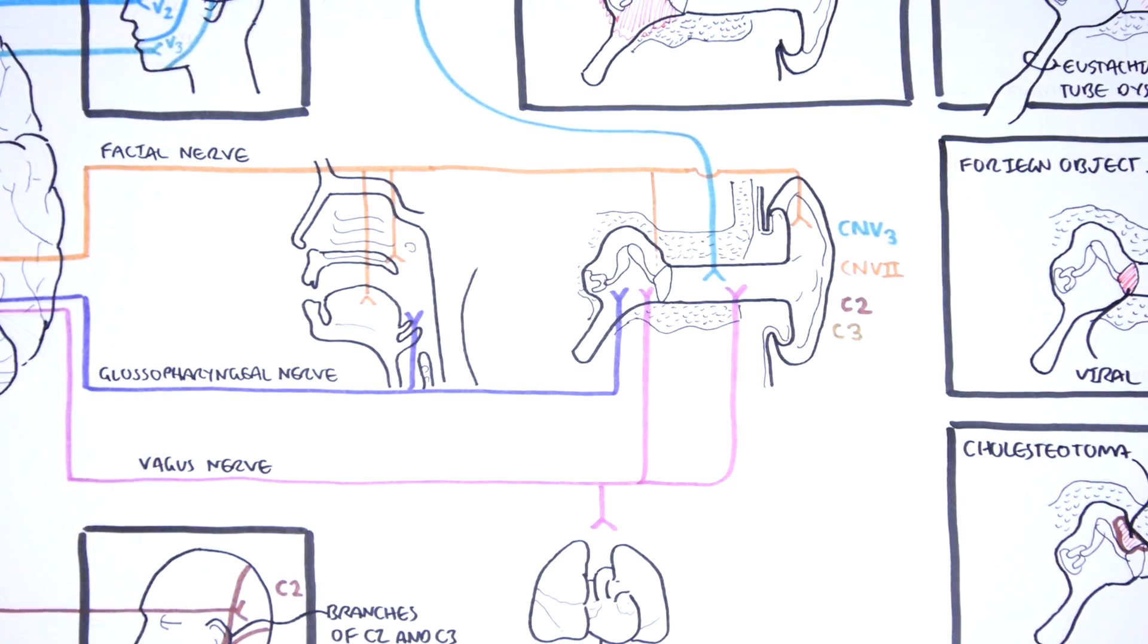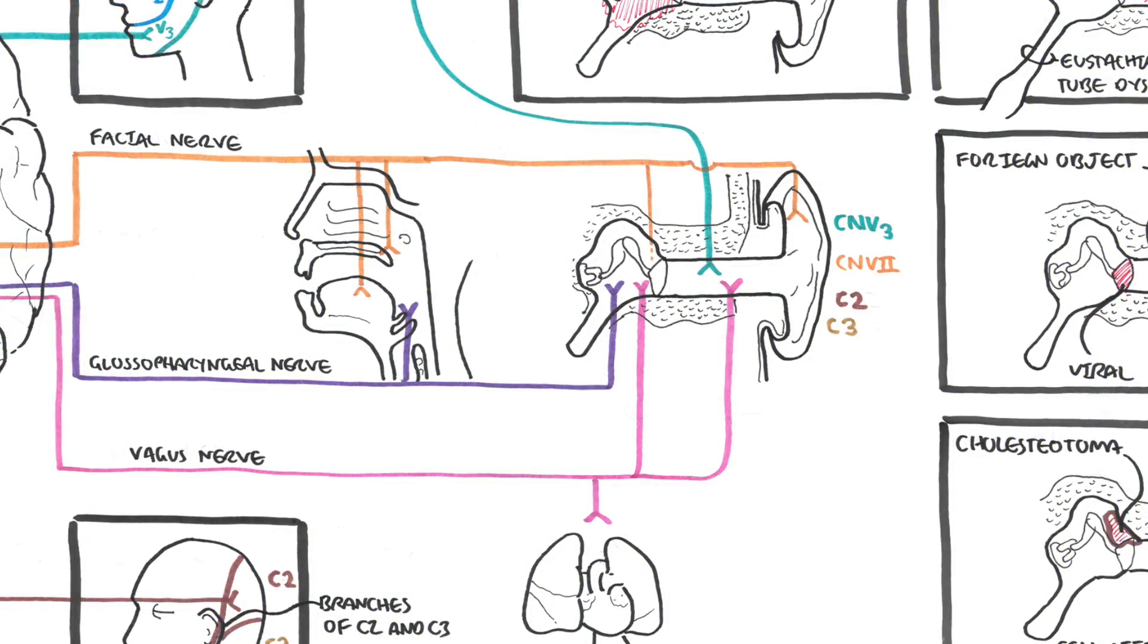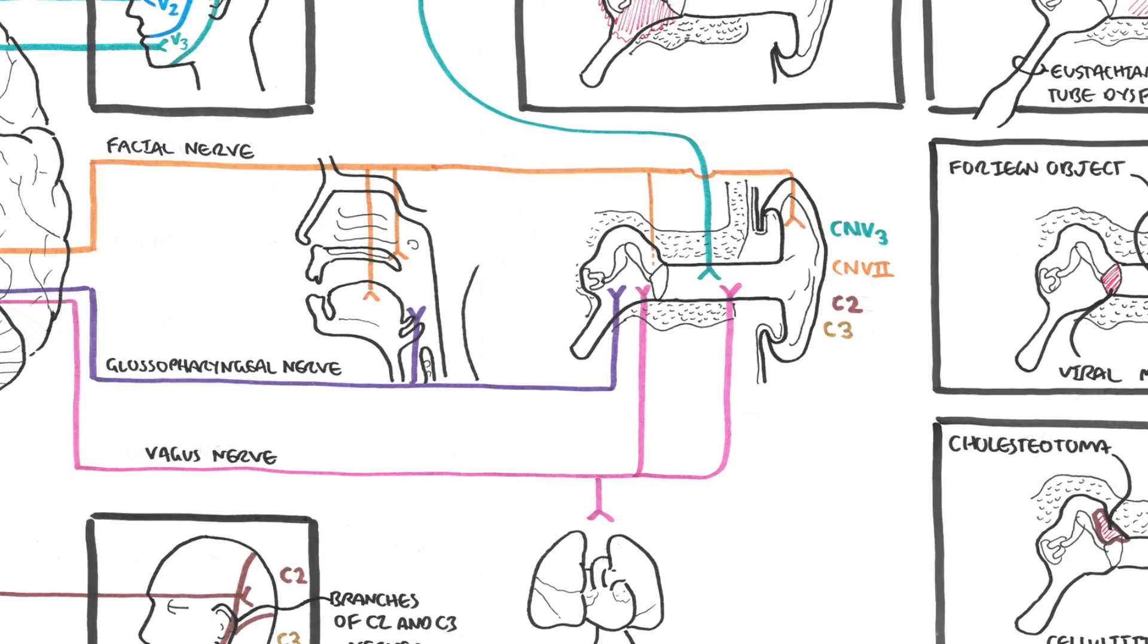So those are some examples of primary otalgia, which is really ear pain caused by pathology in the actual ear.